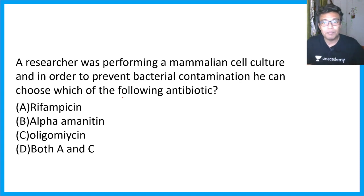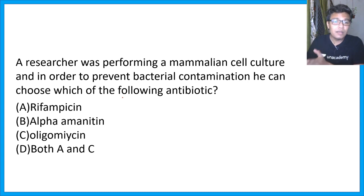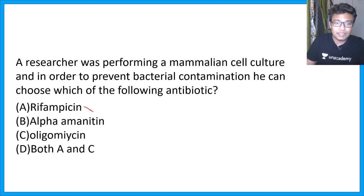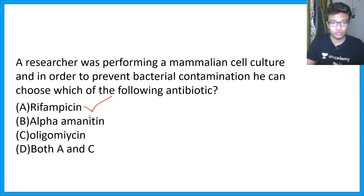A researcher performing mammalian cell culture needs to prevent bacterial contamination — which antibiotic should they choose? It must be specific to prokaryotes and not affect eukaryotes. Rifampicin is very specific to prokaryotes. Oligomycin blocks ATP synthase and would attack both eukaryotes and prokaryotes, so it cannot be used. Alpha-amanitin is selective to eukaryotes, so it would kill the cell culture rather than the contaminant. Therefore, rifampicin is the only correct option.